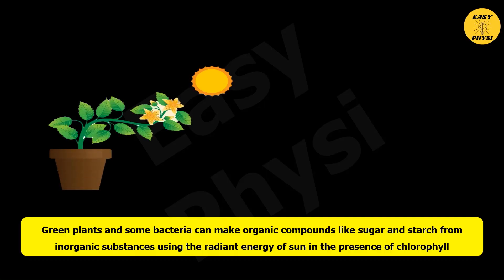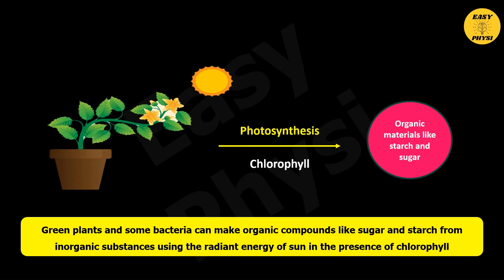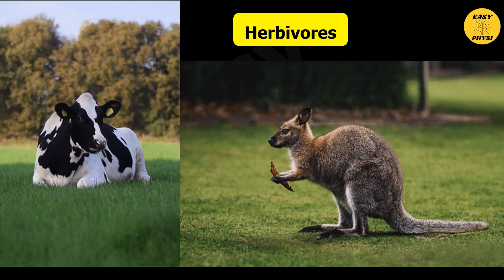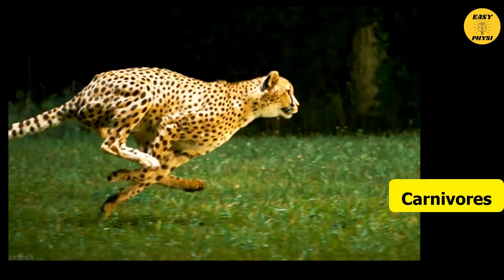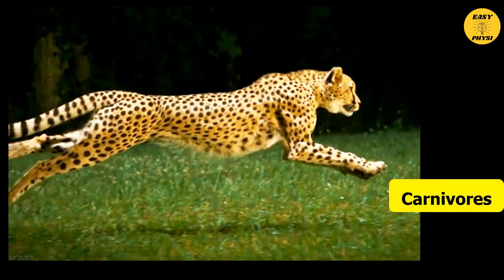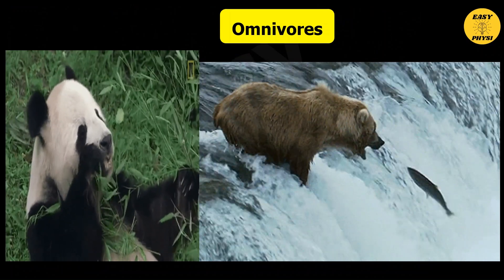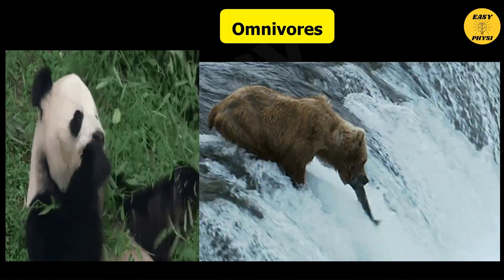Green plants and some bacteria can make organic compounds like sugar and starch from inorganic substances using the radiant energy of the sun in the presence of chlorophyll. The animals that feed on plants are called herbivores, while the animals that feed on herbivores are called carnivores. The animals that feed on both plants and animals are called omnivores.